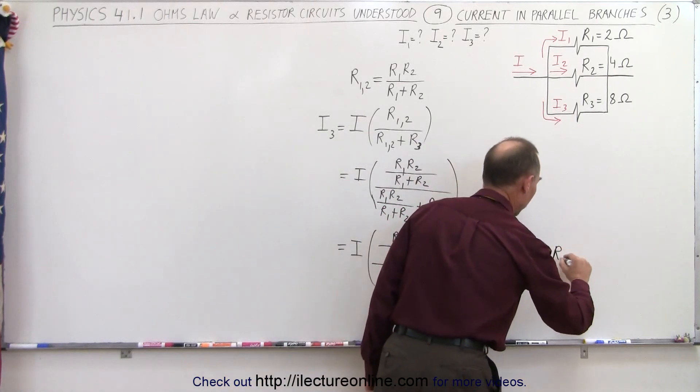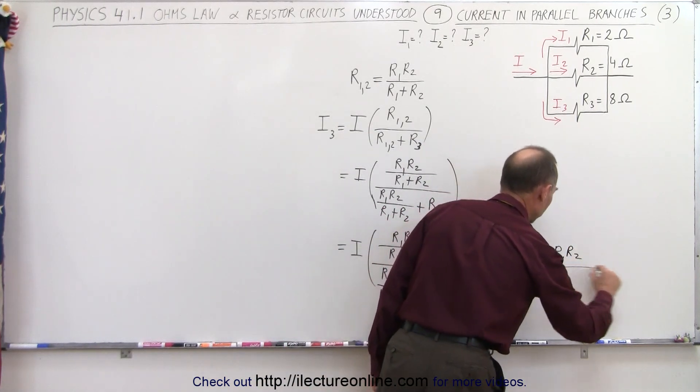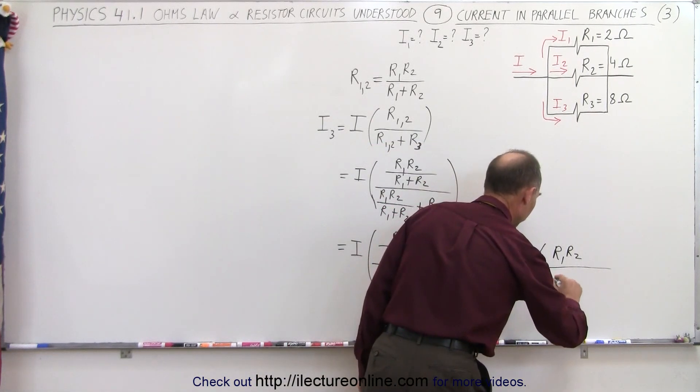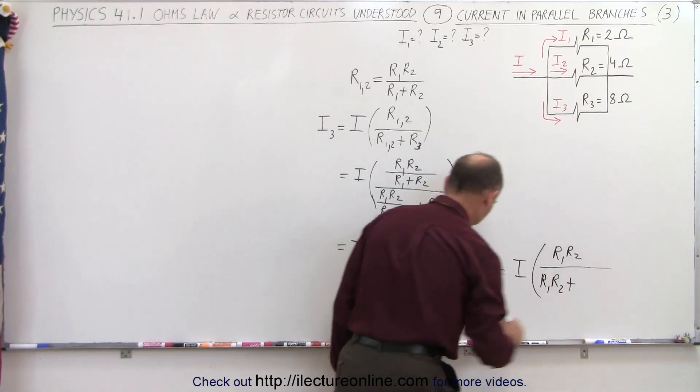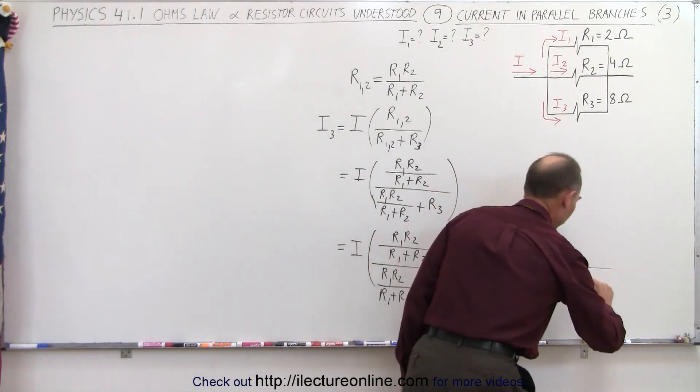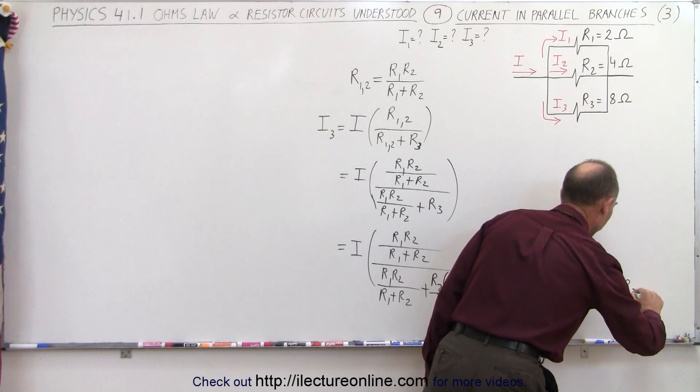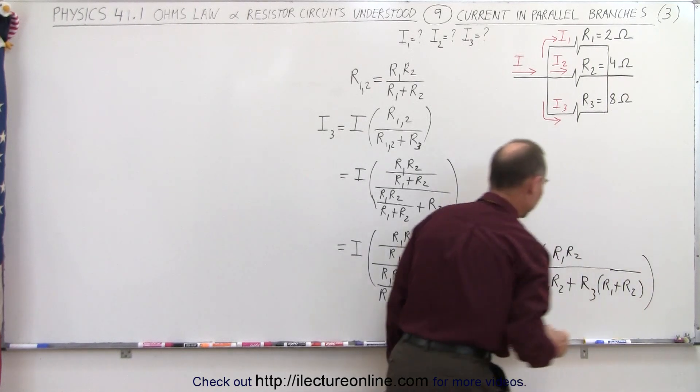In the numerator, we simply get R1 times R2. In the denominator, we get R1 times R2 plus R3 times the quantity R1 plus R2.